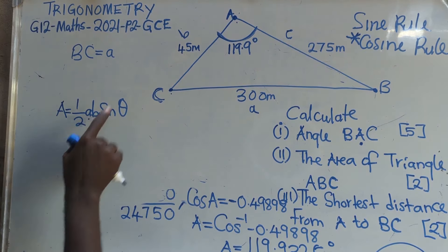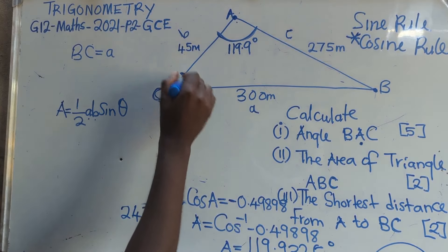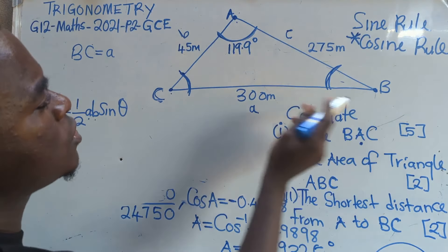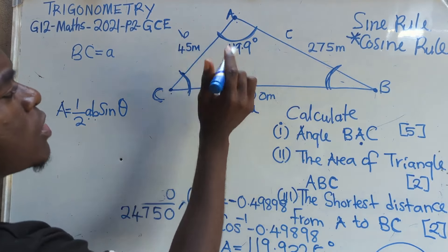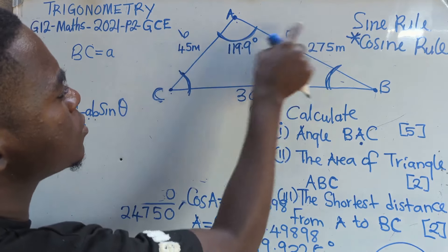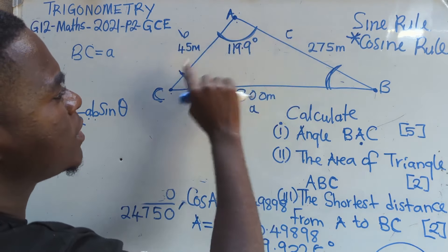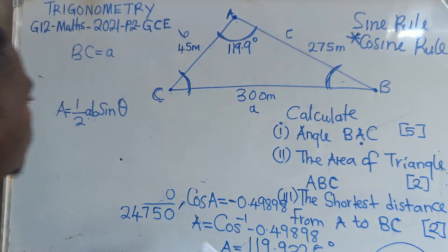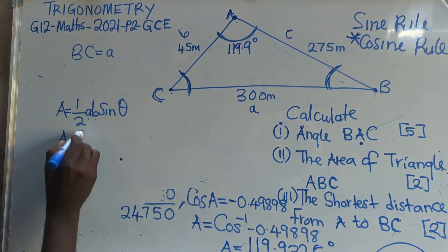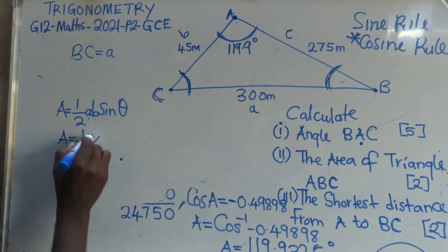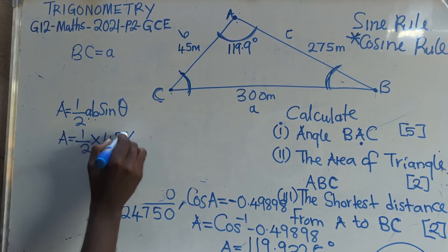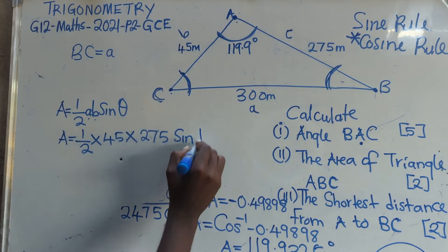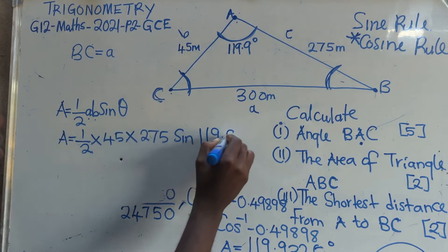So now A and B — in this case, can we use this angle that is here which we don't even know? No. The only angle that we are able to see is this one. So I'm going to use this one and these two sides, which are A and B. You just choose which one is A and which one is B. So area is equal to 1 over 2 times 45 times 275. Then you say sine 119.9 degrees.